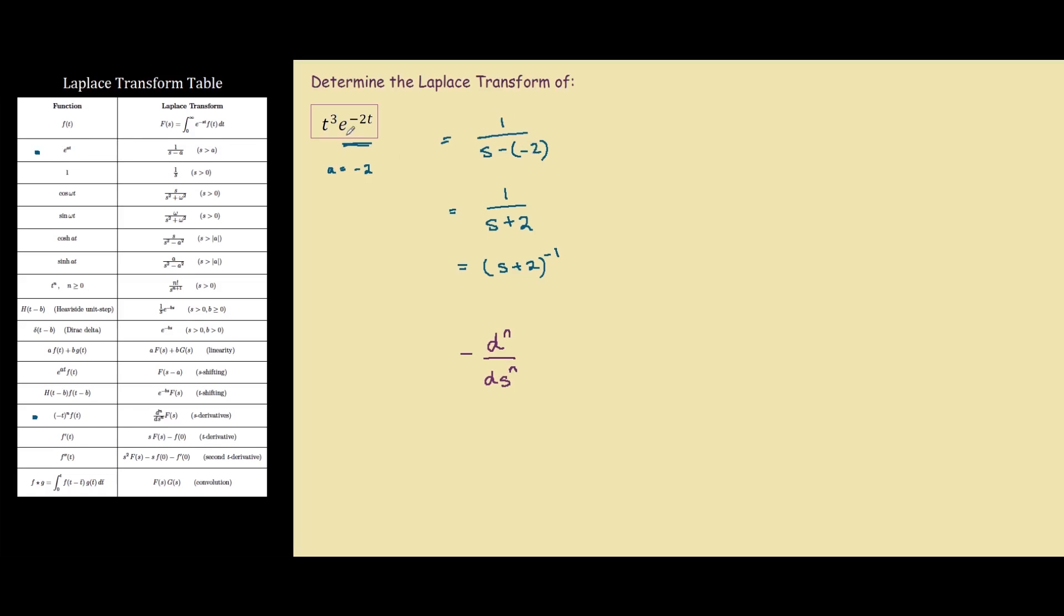We found earlier for this part, so we're taking the derivative of s plus 2 to the power of negative 1. And also because our n is 3, we're taking the third derivative.